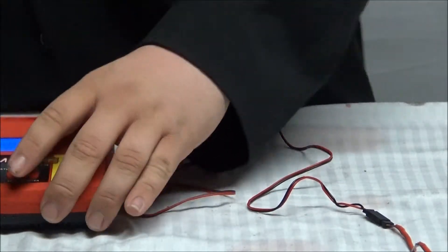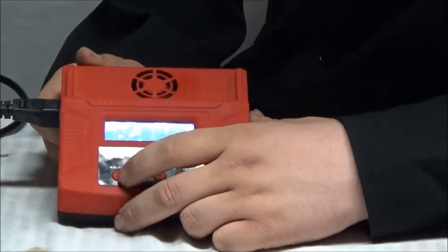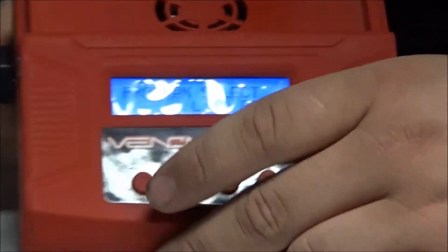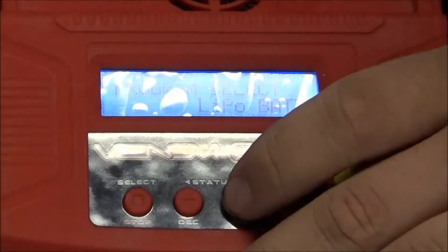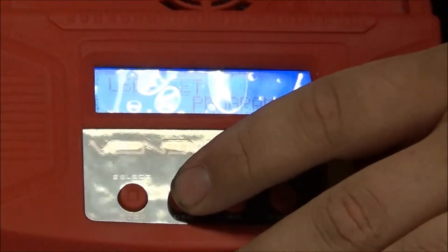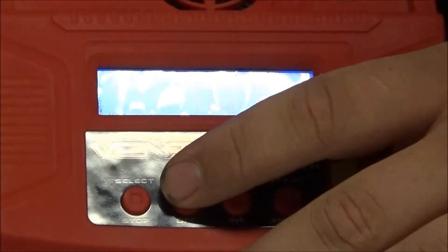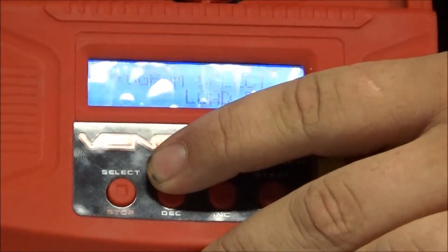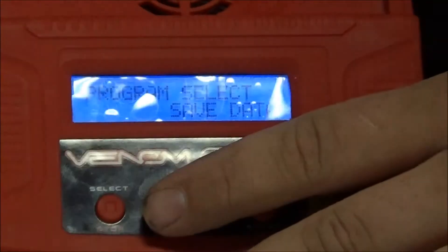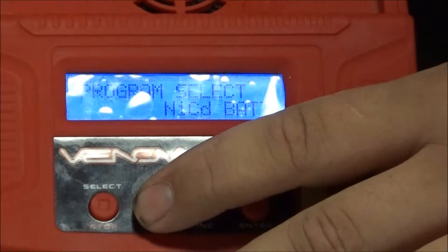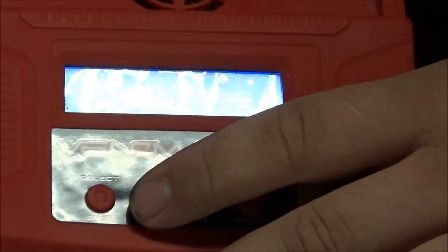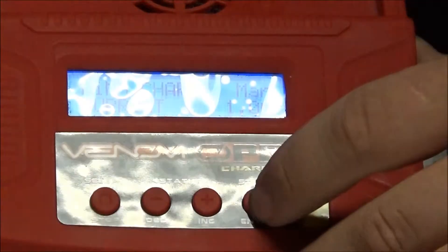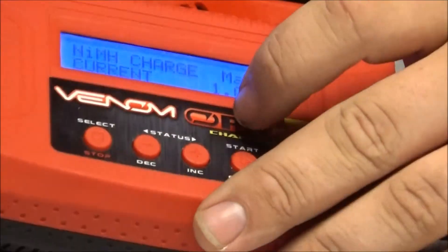Now, what we'll do is go to the same menu. We'll go ahead and click select. We'll go to program. And then what you do is use your status to scroll. Like I said, we have load data, which you can go through your computer and upload data, etc. We can save data. We can select nickel cadmium, nickel metal hydride. We'll click enter or start.